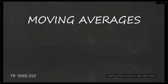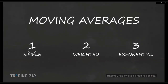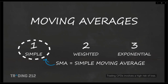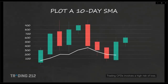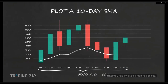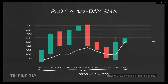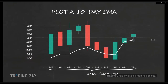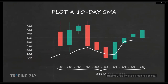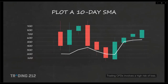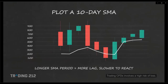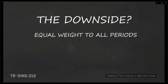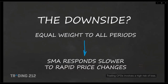There are three main types of moving averages: simple, weighted, and exponential. The simple moving average (SMA) is calculated by adding closing prices over a period and dividing by that number — for example, add the last 10 days' closing prices and divide by 10. This gives equal weight to each day. The longer the SMA period, the more it lags and the slower it reacts to recent price movement. Because equal weight is given to all periods, the SMA is slower to respond to rapid price changes.